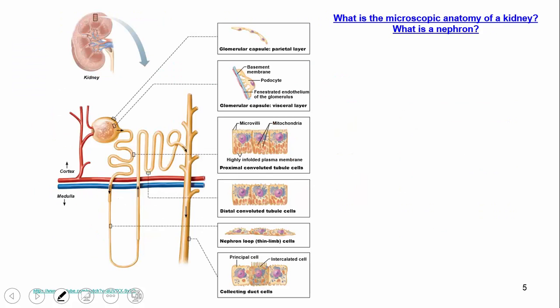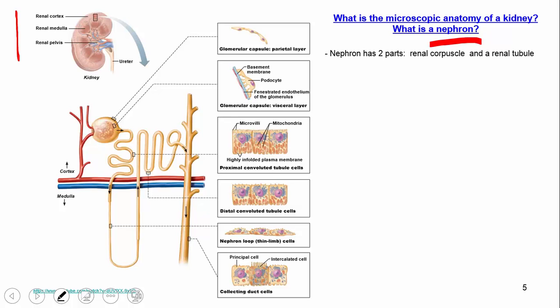What's the microscopic anatomy of the kidney? When we talk about microscopic anatomy, we're focusing on the nephron. There are two main parts: the renal corpuscle and the renal tubule. The corpuscle is the area indicated here, and the tubule is the long yellow tube following after that.